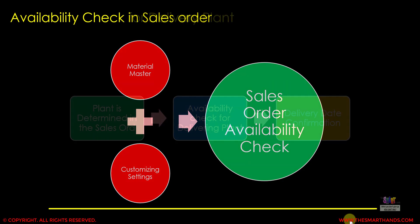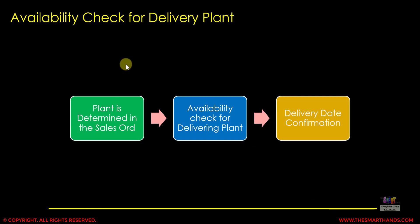An important point to note is that the ATP check is done for the delivering plant that is in the sales order item. When you enter a product code in a sales order, the system automatically determines the delivering plant. The rule is: first the system looks at the CIR record; if not there, it uses the business partner's default delivering plant; and last priority is the material master. The system then performs an availability check for this delivering plant and confirms a delivery date.